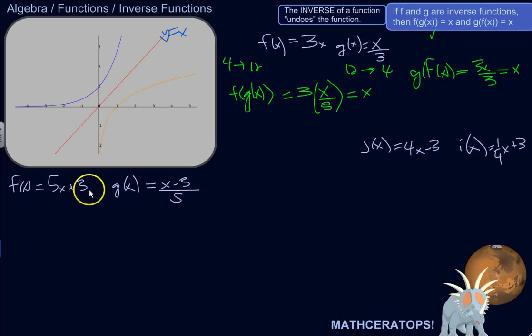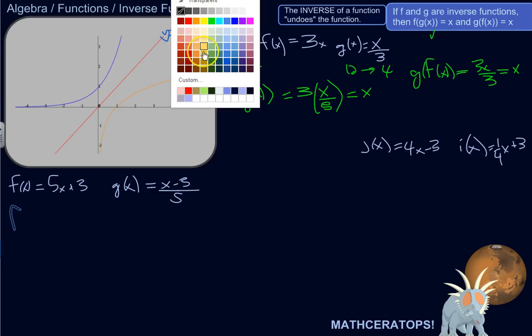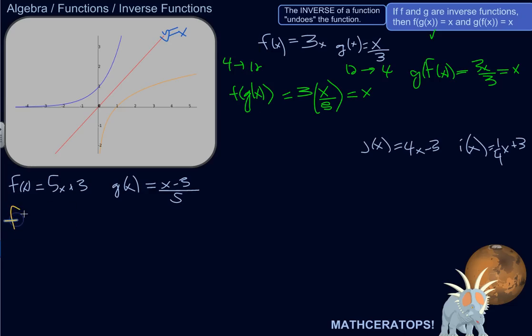f of x is 5x plus 3, and g of x is x minus 3 over 5. So let's use this test. f of g of x is going to be... f of x is 5x plus 3, but x is going to be this whole function, x minus 3 over 5. But 5x, and then plus 3.